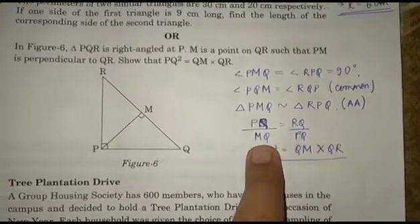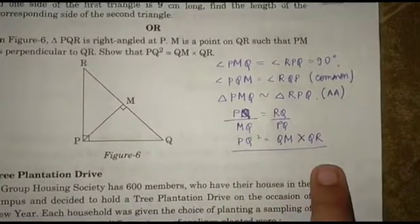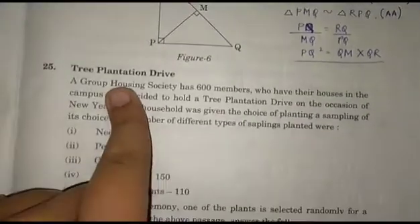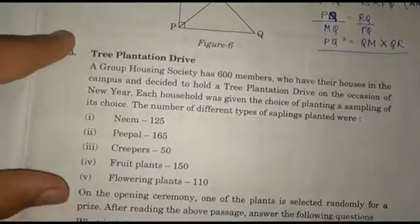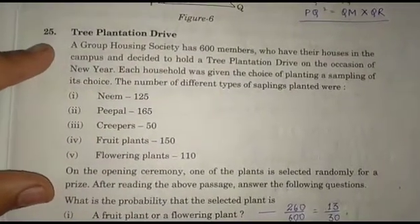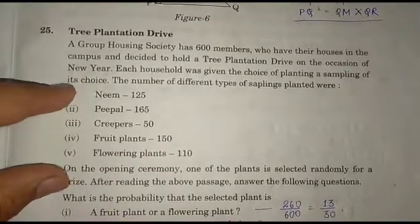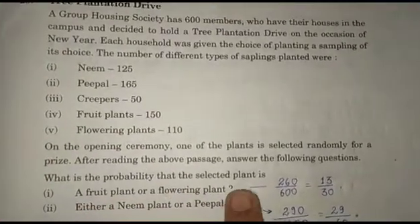Question 25 is a passage about a tree plantation drive with 600 trees. The question asks for the probability that the selected plant is a fruit plant or a flowering plant.